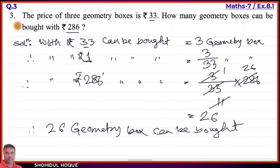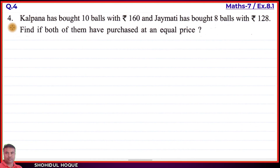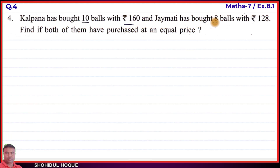Question number 4: Kolpona has bought 10 balls with rupees 160, and Jhoi Moti has bought 8 balls with rupees 128. Find if both of them have purchased at an equal price.